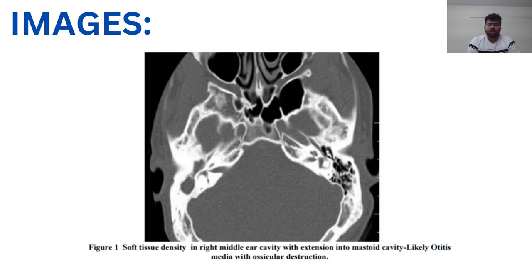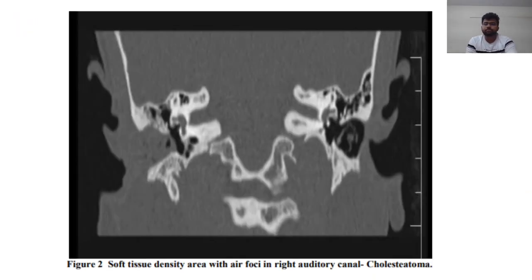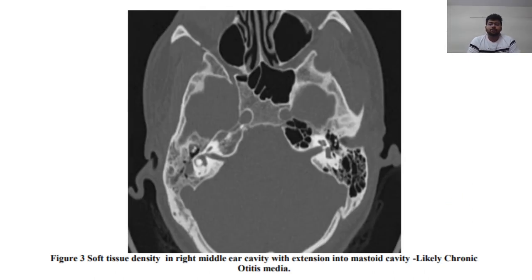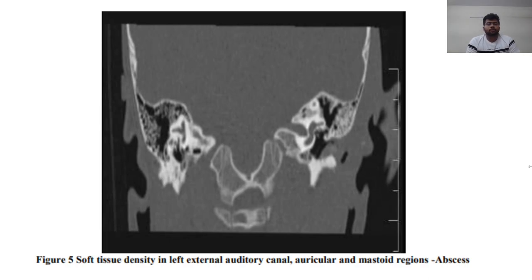Here are a few image examples from our study. The first shows soft tissue density in the right middle ear cavity with extension into the mastoid cavity, consistent with otitis media with ossicular chain disruption. The second shows soft tissue density with air foci in the right auditory canal, likely a cholesteatoma. Another case shows soft tissue density in the right middle ear cavity extending into the mastoid cavity, likely chronic otitis media. One case shows soft tissue density in the right mastoid air cells only, consistent with mastoiditis. Finally, soft tissue density in the left external auditory canal, auricular, and mastoid regions turned out to be an abscess.